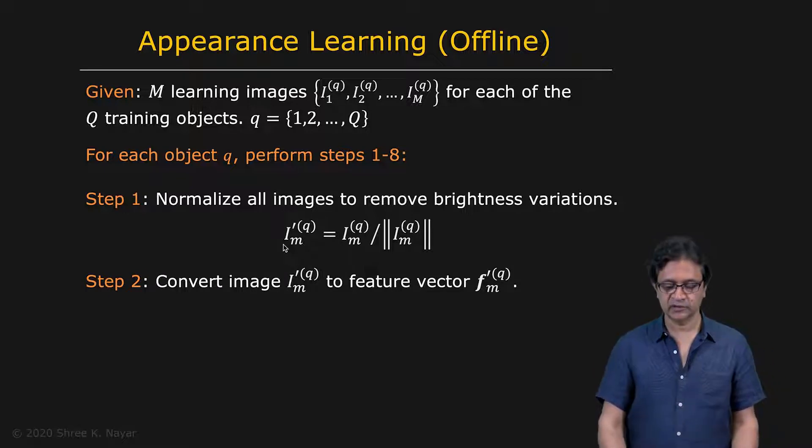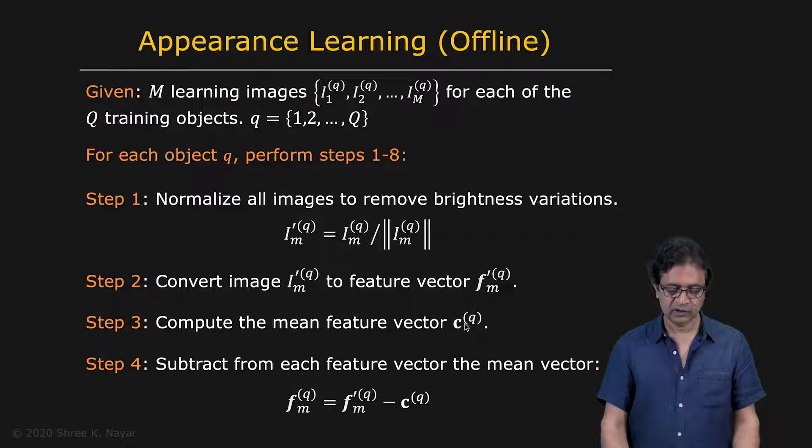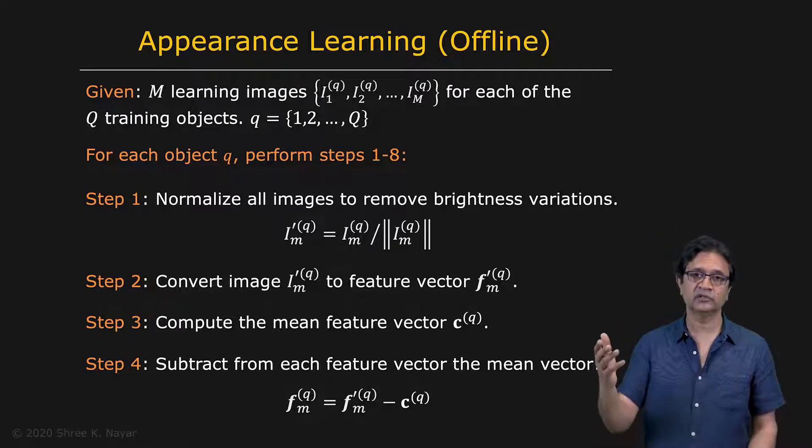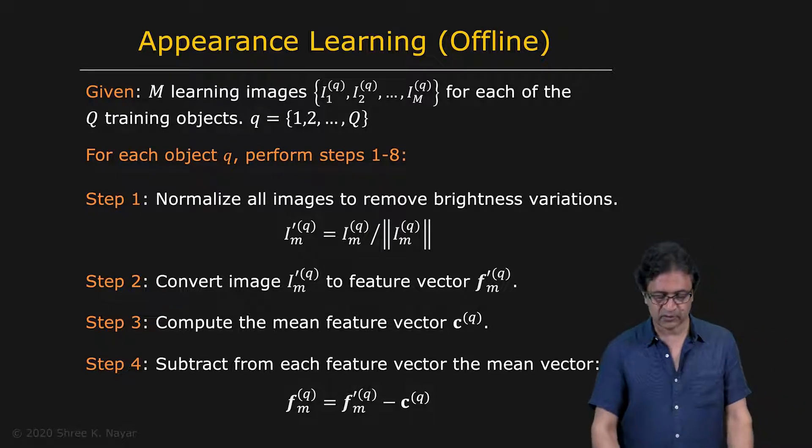Then you're going to convert each one of these images into a vector. We'll call these images as well, but they're vectors now. And then you compute the mean feature vector for the object Q, that's CQ. You're going to subtract the mean from each one of the images for that object and you get the mean subtracted images. We compute a mean vector for each one of these objects and we store that as well, because in the future when we see an image and we're trying to figure out whether it's this particular object, we need to subtract it with the mean of that object.